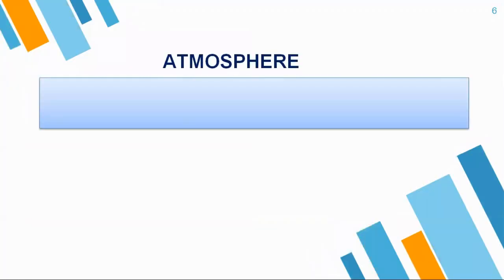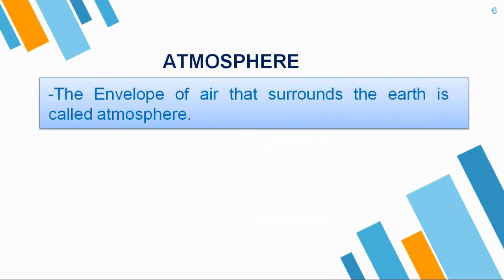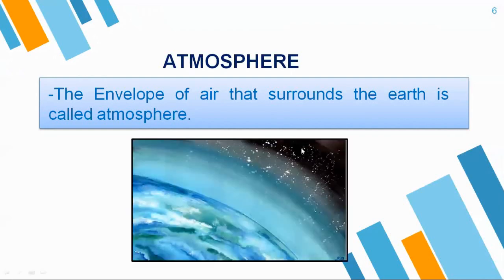Atmosphere. Before we advance further in the chapter, let us learn about atmosphere. We must have heard about this word many a time. The envelope of air that surrounds the earth is called atmosphere — the layer of air which covers the earth. Just like you wear sweaters in winter layer after layer to keep yourself warm, same way there are layers of air that cover the earth. That is called your atmosphere. Here in the image it is depicted in different colors — the lighter blue shade, then white, black and so on — to depict the different layers of air that surround the earth.